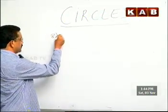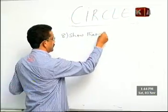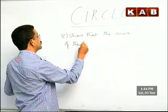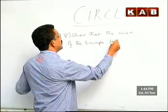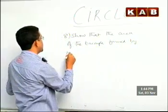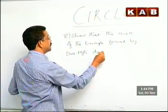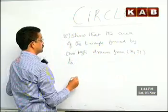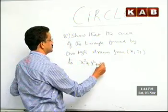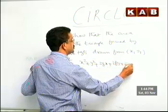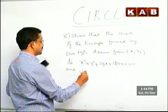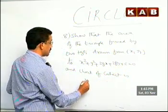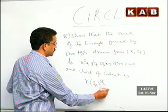The question is, show that the area of the triangle formed by two tangents drawn from X1, Y1 to X square plus Y square plus 2GX plus 2FY plus C equals zero, and chord of contact is R into S11 whole power three by two by R square plus S11.